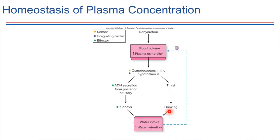Thinking about blood plasma and homeostasis — not necessarily in the context of an IV, but in terms of normal human physiology — how is the plasma concentration normally maintained? How is homeostasis maintained for the blood plasma? We know that blood osmolality has to be maintained within a very narrow range, and it needs to match up with the osmolality inside the cells. Otherwise there will be problems.